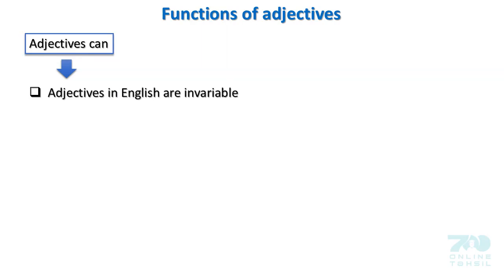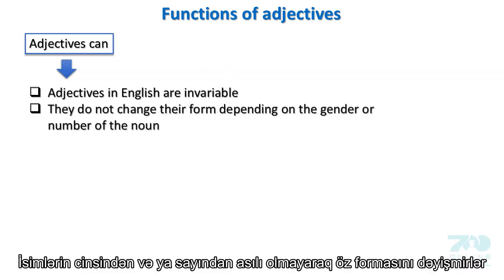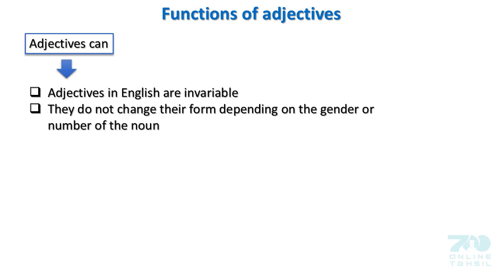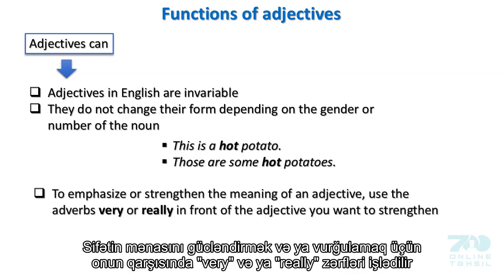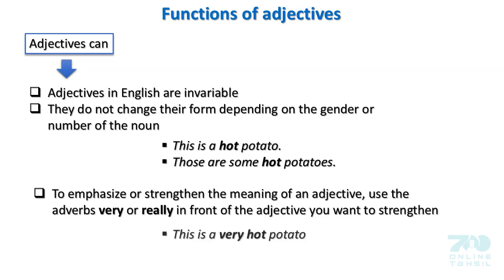Adjectives in English are invariable. They do not change their form depending on the gender or number of the noun. Examples: This is a hot potato. Those are some hot potatoes. To emphasize or strengthen the meaning of an adjective, use the adverb 'very' or 'really' in front of the adjective you want to strengthen. Examples: This is a very hot potato. Those are some really hot potatoes.